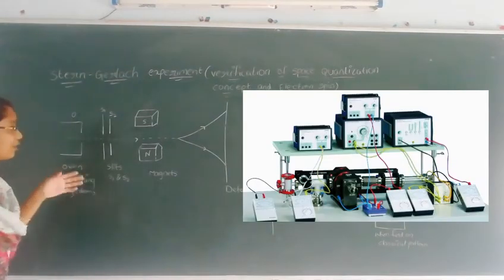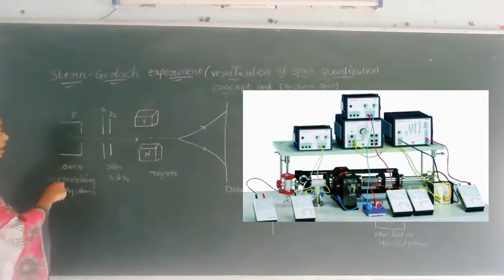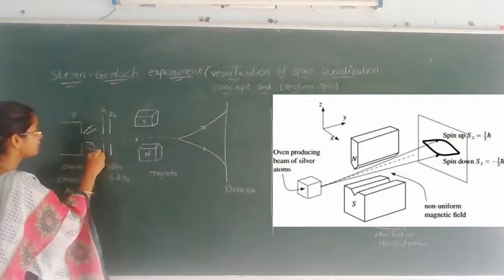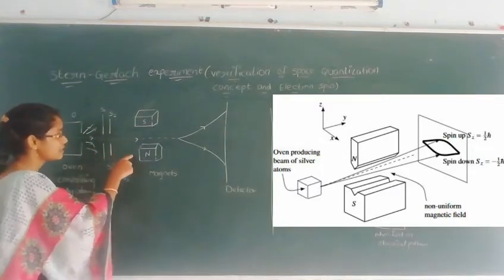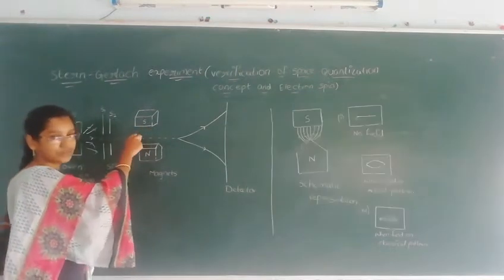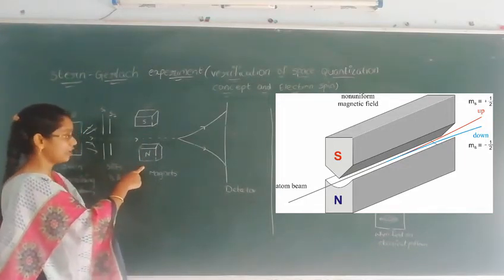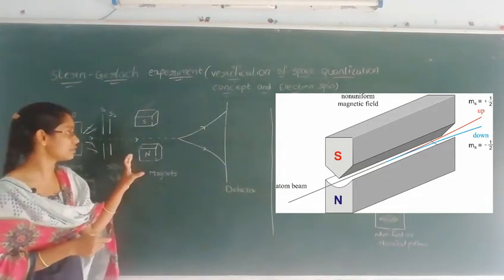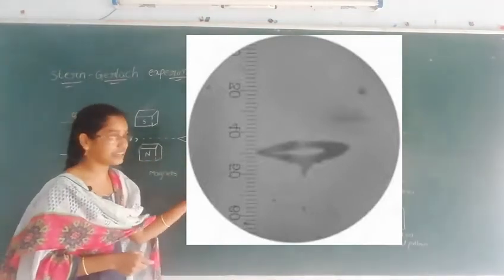When coming to our experiment, let us consider an oven which contains silver atoms. These silver atoms are emitted in different directions and are collimated to slits S1 and S2. Let us consider two magnetic poles—one pole is the south pole with a flat surface, and another pole is a sharp knife edge. This is a specially designed pole. Due to this, inhomogeneous magnetic field is produced. And due to inhomogeneous magnetic field, two doublet lines are detected at the detector.